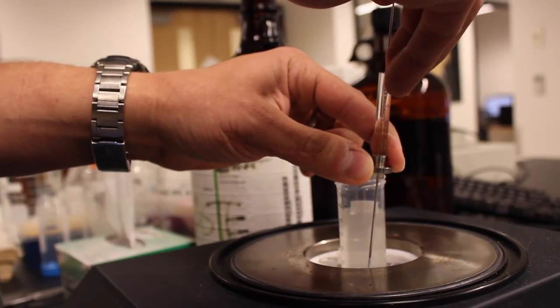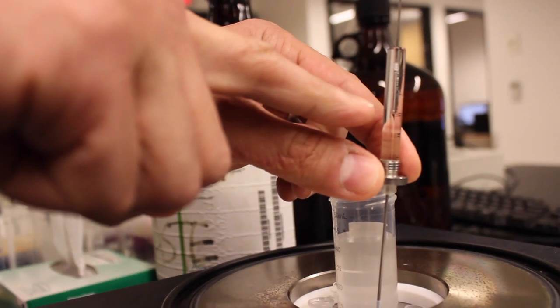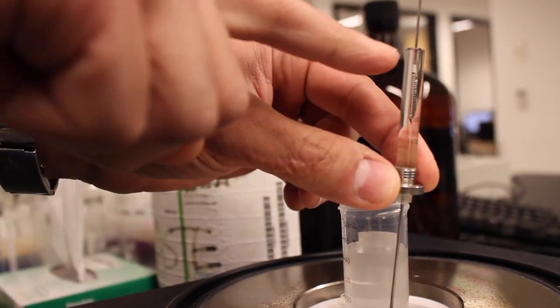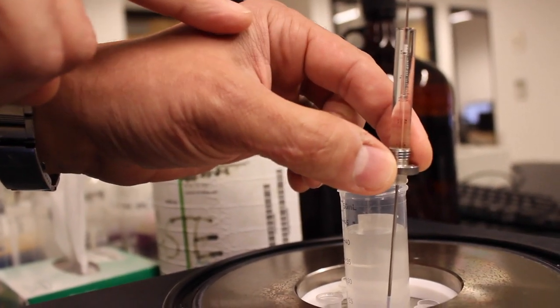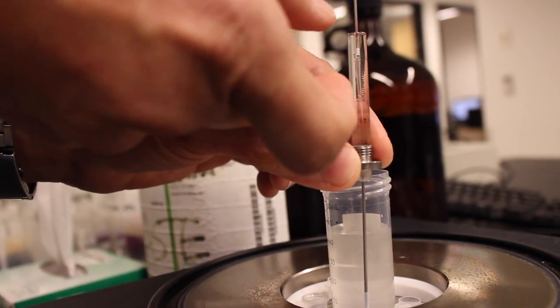What you will see is the solution is drawn up but there's quite a large gap between the top of the liquid and the plunger. So we need to reduce that gap. We want the gap to only be about one millimeter in size.